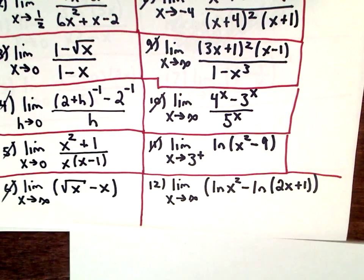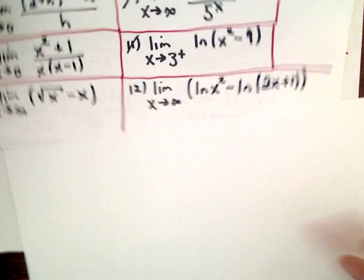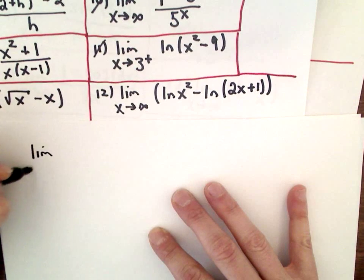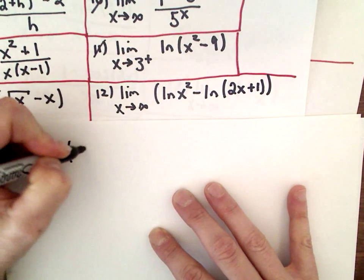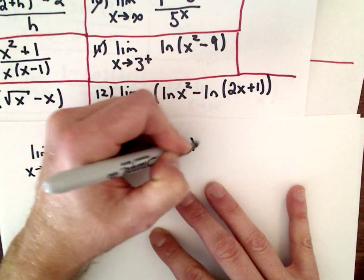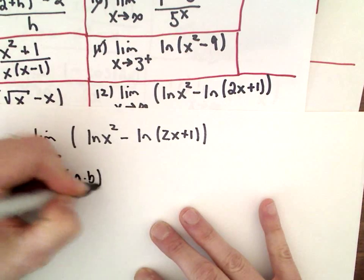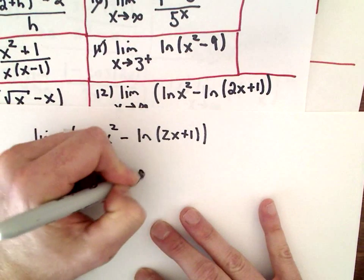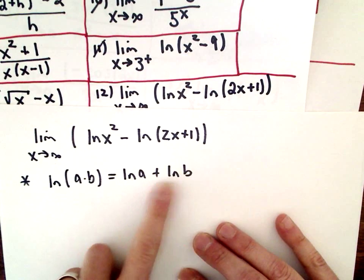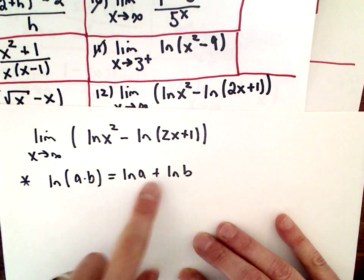Now problem 12 — sorry if I sound a little miserable, your humble narrator is a tad under the weather. Problem 12 is the limit as x approaches infinity of ln(x²) minus the natural logarithm of (2x+1). To remind you of properties of logarithms: the natural logarithm of a product becomes addition, so ln(a·b) equals ln(a) plus ln(b). This works for any logarithm, not just natural logarithms — products become pluses.